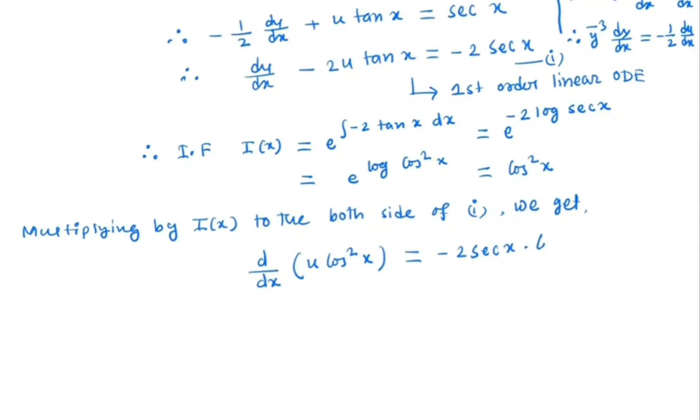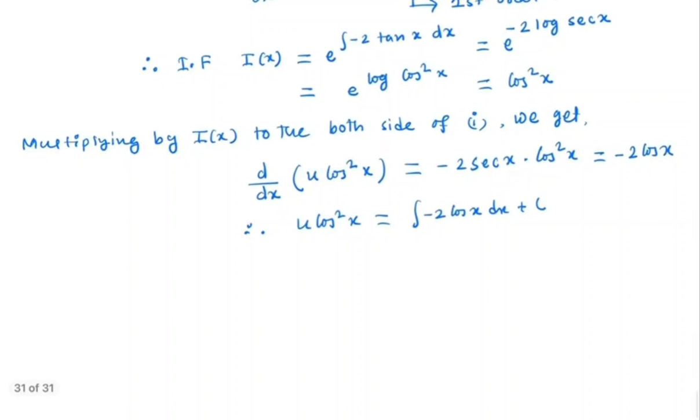So integrating, u cos^2 x equal to integral of minus 2 cos x dx, which is minus 2 sin x plus c. Therefore, u equal to cos^2 x times (minus 2 sin x plus c).